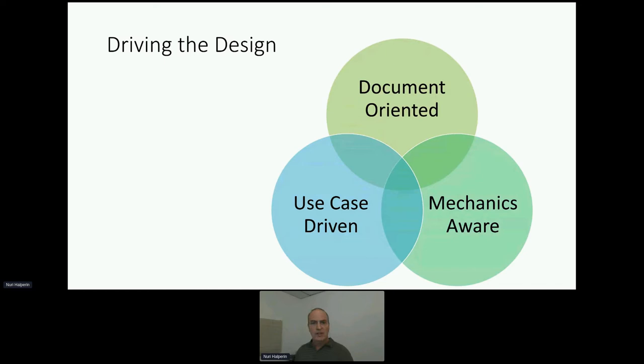So driving those design decisions, we have core concepts. The first one and chief one is the document-oriented nature of MongoDB. We want to keep that in mind that it is a document database, not a relational database, not a graph database, not a key blob store. We want to be aware of the mechanics of how exactly MongoDB engine stores the documents, accesses them, and processes them. And knowing these mechanics will enable us to pitch into its strength rather than assume it's doing certain ways like other engines and possibly leave some points on the table.